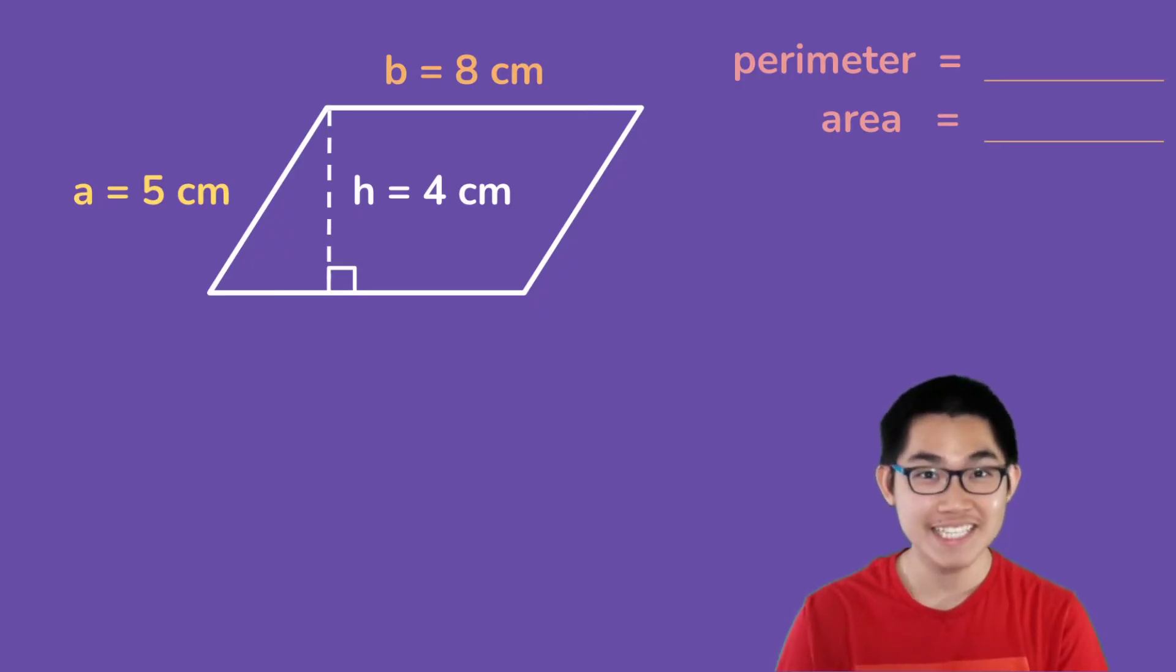So what is a parallelogram? Well, it's a shape that is pretty similar to a rectangle because it has four sides and four corners just like a rectangle, but the only difference is that the corners are not necessarily 90 degree angles. So how do you find the perimeter of this shape?